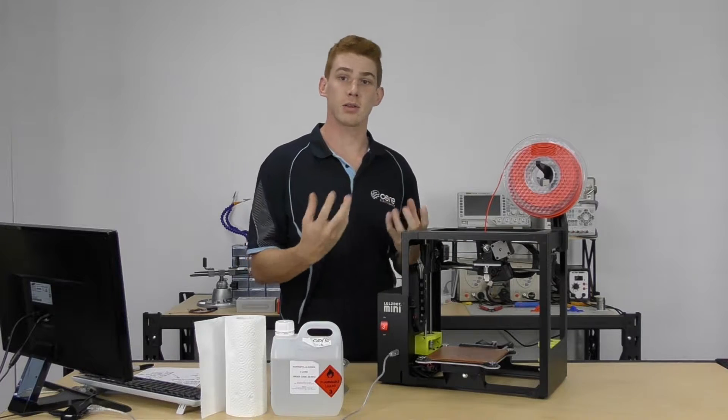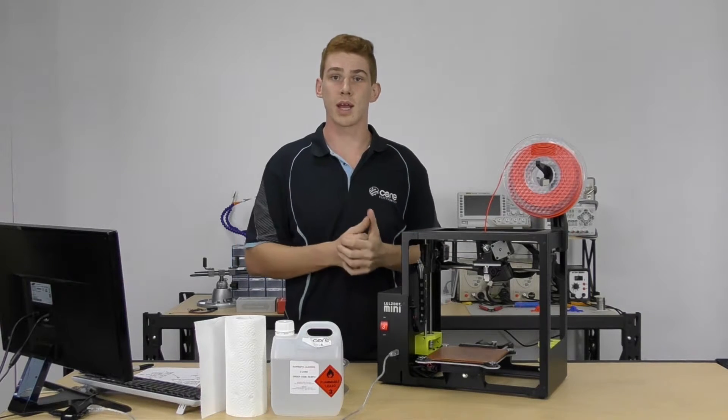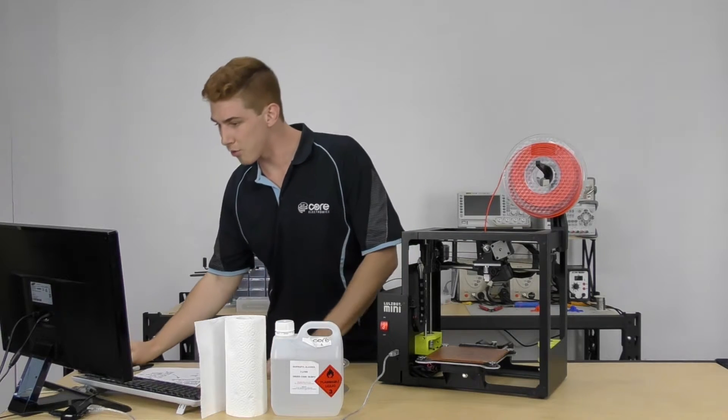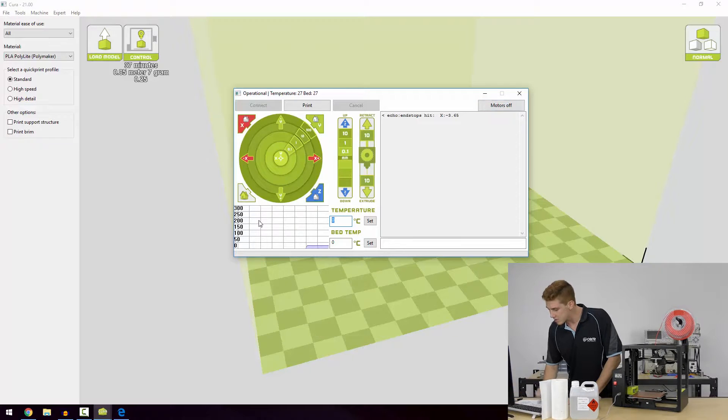So what I'm going to need to do is raise the extruder temperature. Once I raise it, it'll make the plastic malleable and I'll be able to pull it out nice and easily. So I'll go ahead and do that and we'll set the temperature to 230 degrees as it's an ABS filament.